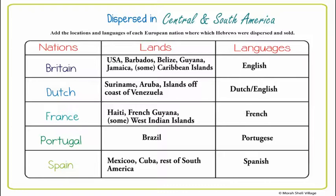Then Portugal — those enslaved Africans occupied by Portugal were sent to Brazil, and they speak Portuguese. And then Spain — lots of enslaved Africans under Spanish rule are in Mexico and pretty much the rest of the Latin American countries. I would list them, for example, like Cuba, Puerto Rico, Colombia, Argentina, Peru, Chile, Bolivia, etc. And they speak Spanish.